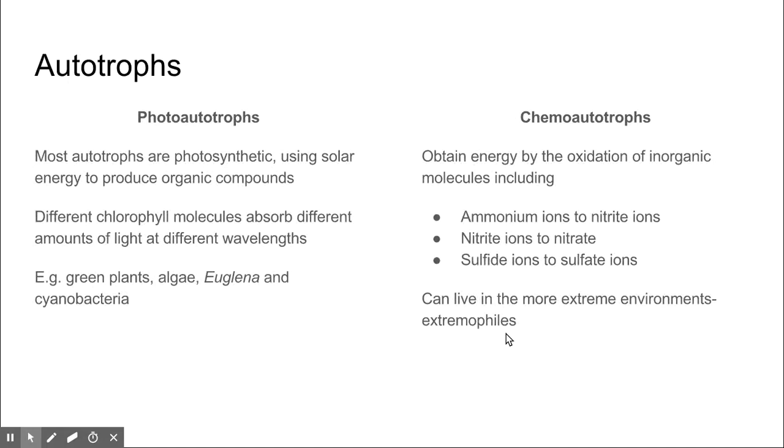Phototrophs are plants or autotrophs that use solar energy to produce organic compounds. One example are the green plants, which have chlorophyll molecules that absorb different amounts of light at different wavelengths. There are a range of chlorophyll molecules, not only the green chlorophyll pigment, which can absorb different amounts of light based on different wavelengths.